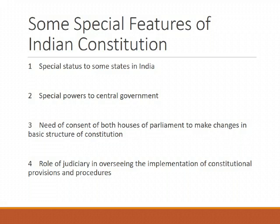Third, there is a need for the consent of both houses of Parliament to make changes in the basic structure of the Constitution. It is not easy to make changes to the provisions given in the Constitution. Parliament cannot on its own change this arrangement. Any change has to be first passed by both houses of Parliament with at least a two-thirds majority. Then it has to be ratified by the legislature of at least half of the total states in India.